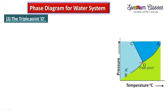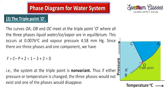The triple point O is where all three curves OA, OB, and OC meet, and all three phases — liquid water, ice, and vapor — are in equilibrium. This occurs at 0.0076°C and a vapor pressure of 4.58 mmHg. Applying F = C − P + 2 with C = 1 and P = 3 gives F = 0. So the triple point is invariant (zero degrees of freedom) — it exists at this specific pressure and temperature only. If we change either, all three phases will no longer be in equilibrium.